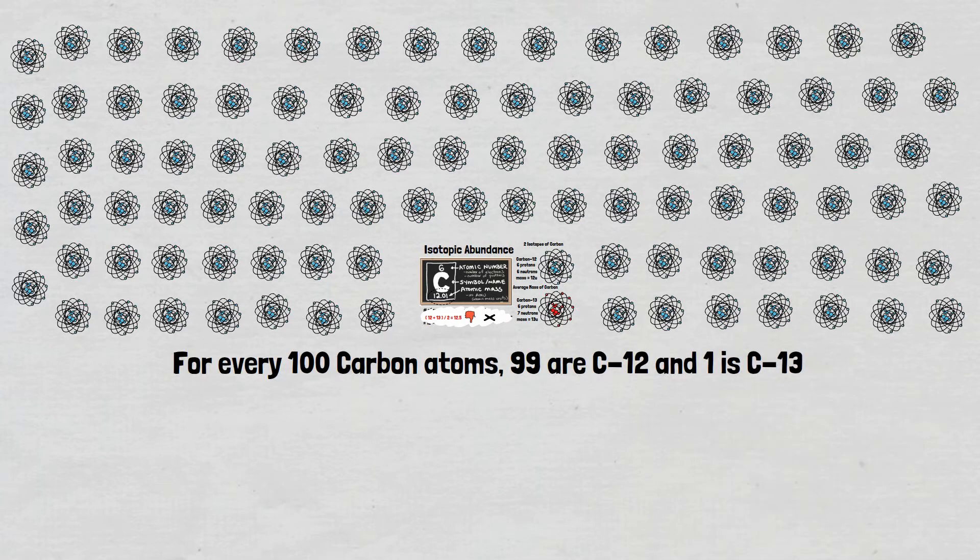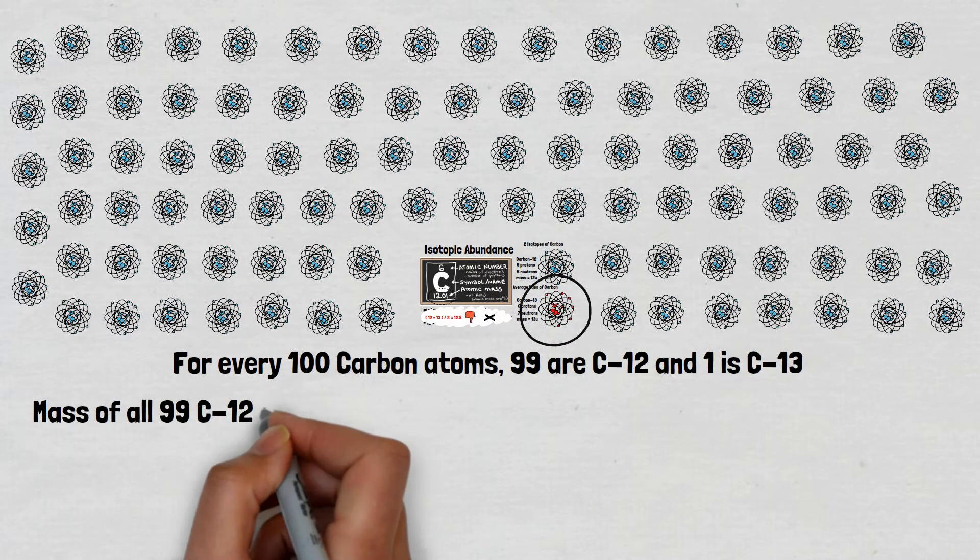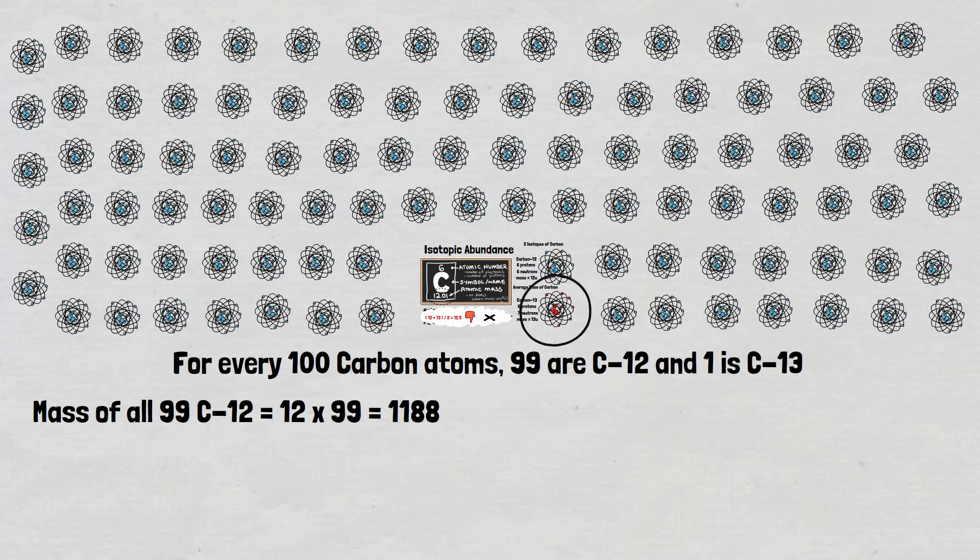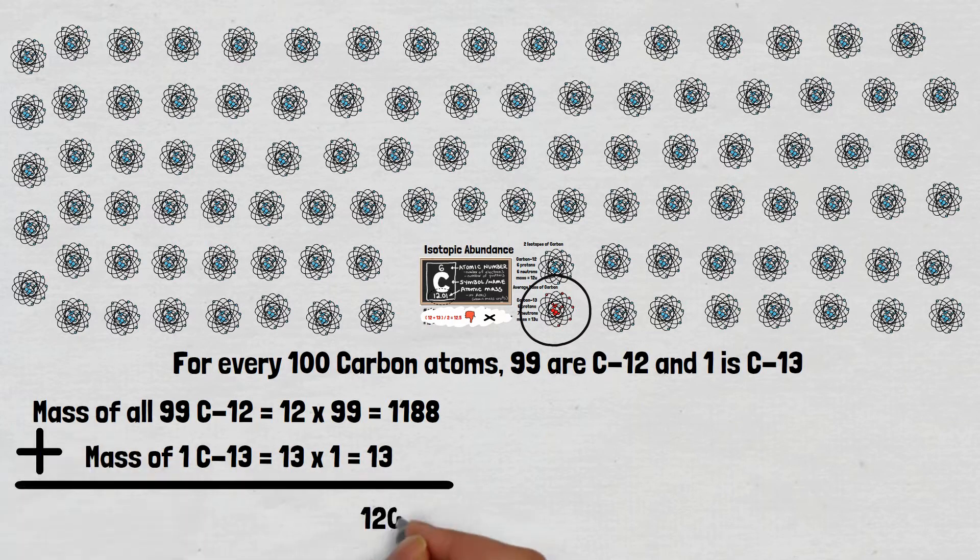For every 100 carbon atoms, we find only one carbon-13 atom. Let's find the average of all these atoms by adding the masses of all 99 carbon-12 atoms and 1 carbon-13 atom.